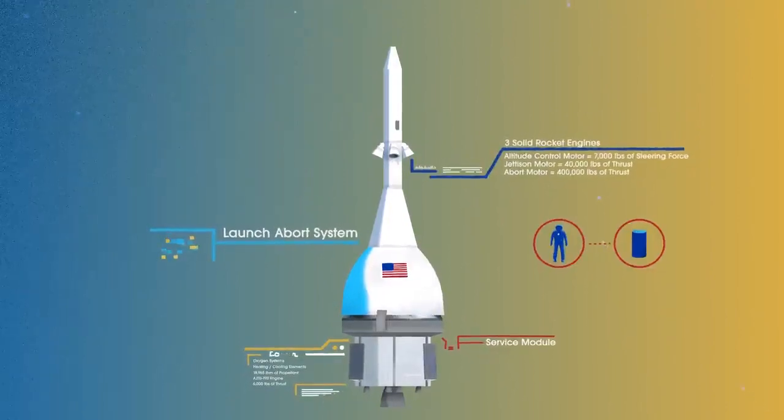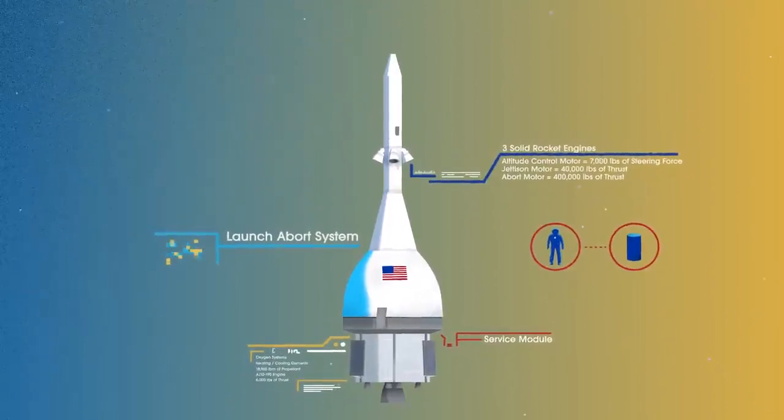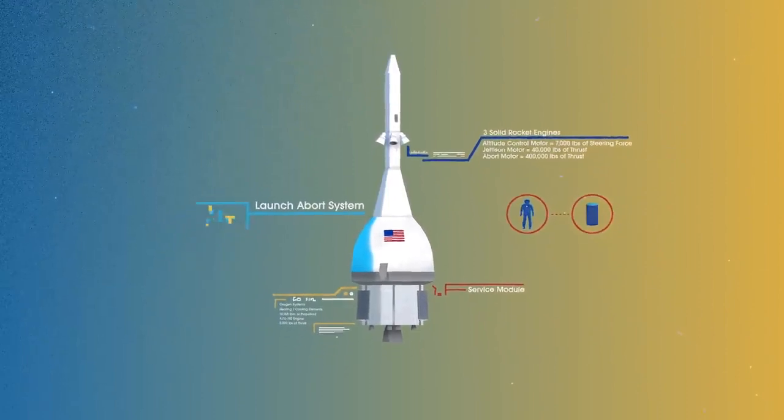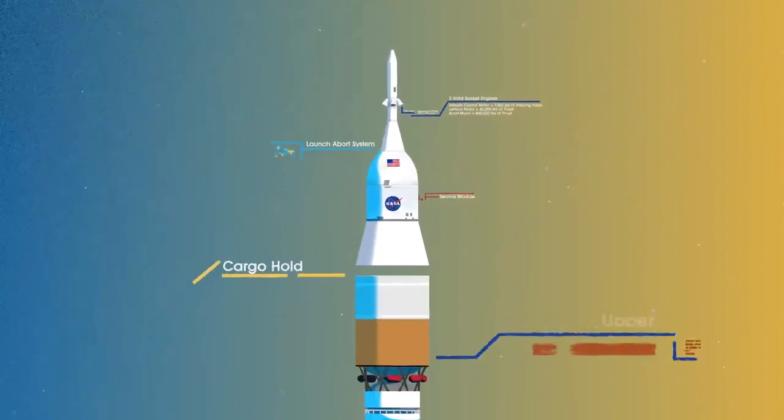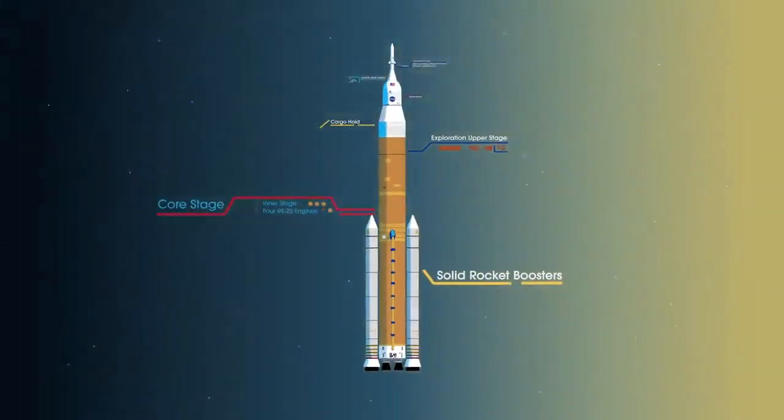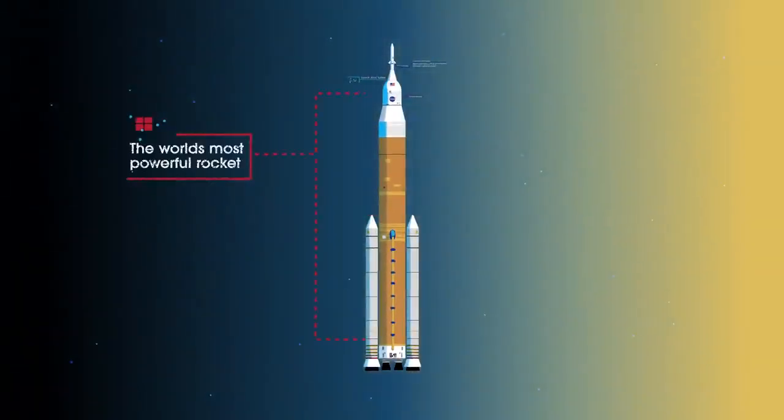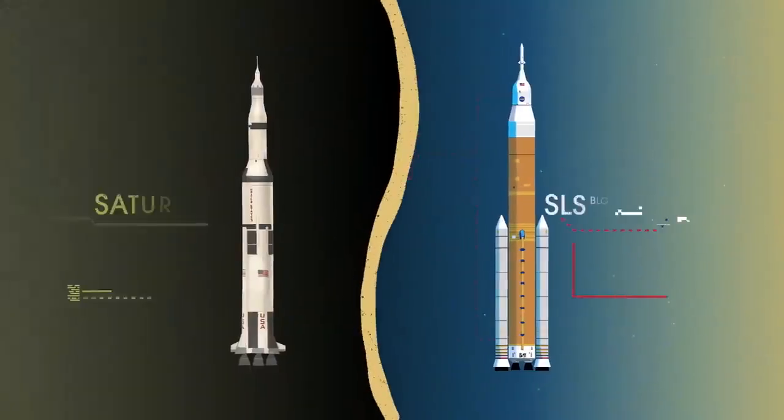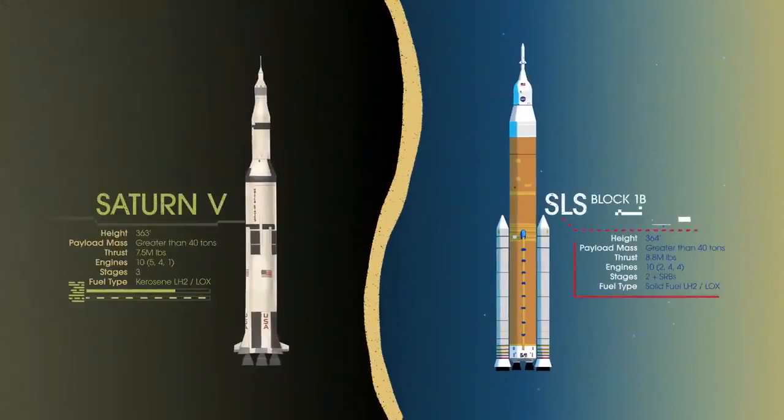To accomplish the task of launching our crew and heavy payloads, NASA is building the Space Launch System, comprising of a cargo hold, an exploration upper stage, a massive core stage, and two extended solid rocket boosters. Altogether, this is the world's most powerful rocket, and it exceeds the legendary Saturn V of the Apollo era in numerous ways.